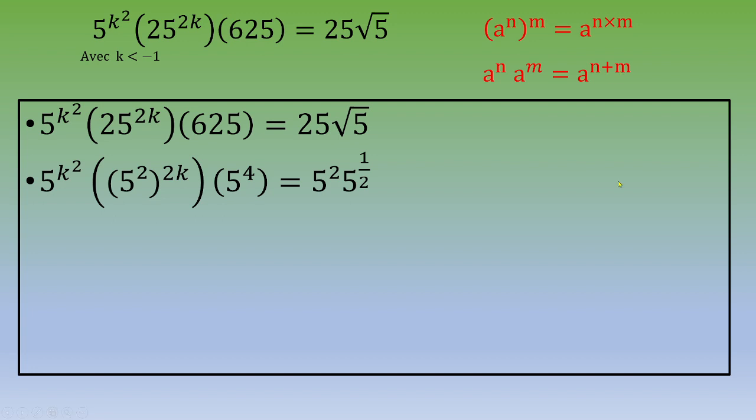So let's apply these two formulas to this equation. You end up with 5^(k²), it doesn't change, times 5^(4k) because the power is 2 times 2k, times 5^4, it doesn't change.